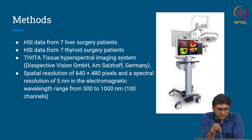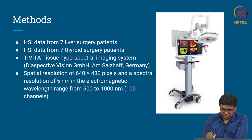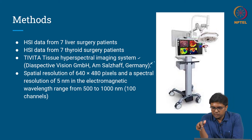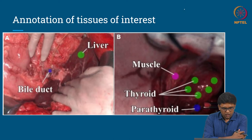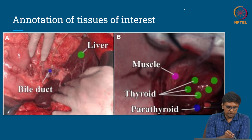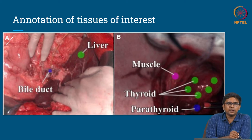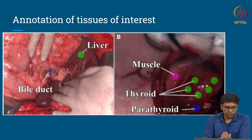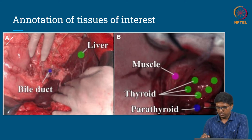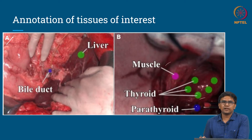They used a tissue hyperspectral imaging system from a German brand for collection of hyperspectral data. This system gives a spatial resolution of about 640 × 480 pixels and a spectral resolution of about 5 nanometers in the electromagnetic wavelength range from 500 to 1000 nanometers. The hyperspectral image data is shown here: surgeons are involved in annotation of this data. They are not doing complete semantic segmentation but are just allowed to label regions — for example, this part is liver, this is where the bile duct lies, this is the thyroid gland, the neck muscles, and where the parathyroid gland lies.